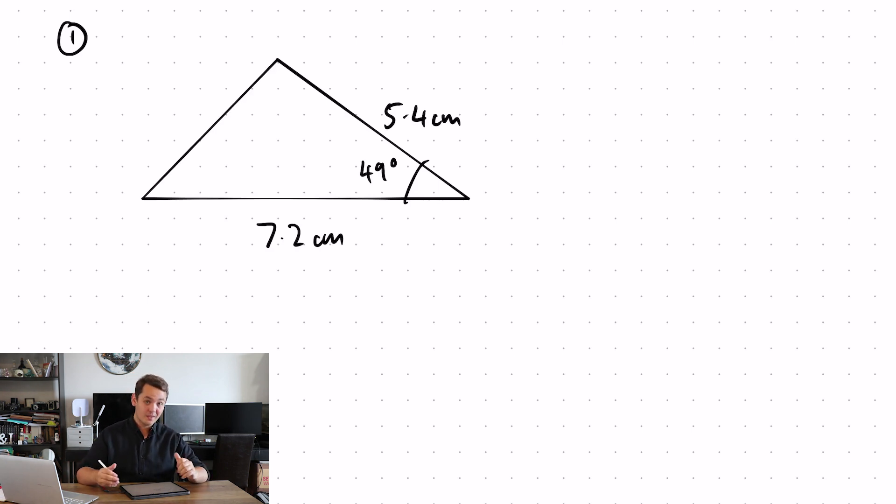Hopefully you've had a good go at that question. So let's have a look at how it's done. So label up your sides A, B, and angle C. Two sides and an angle between.